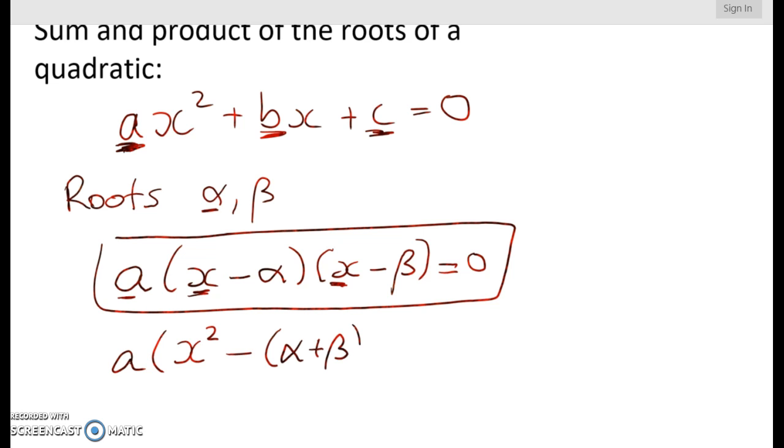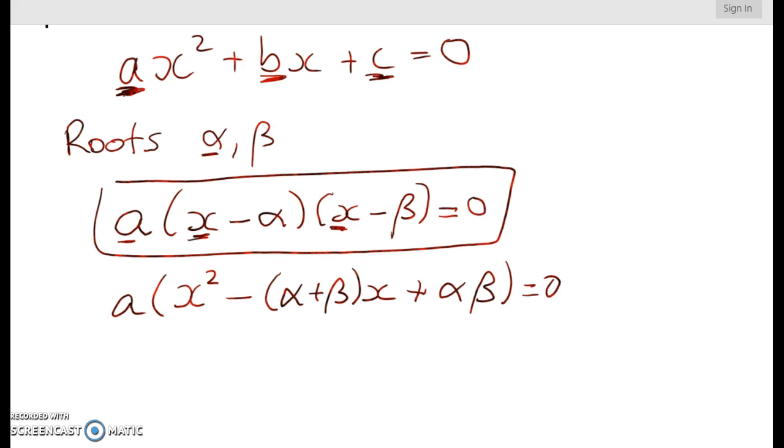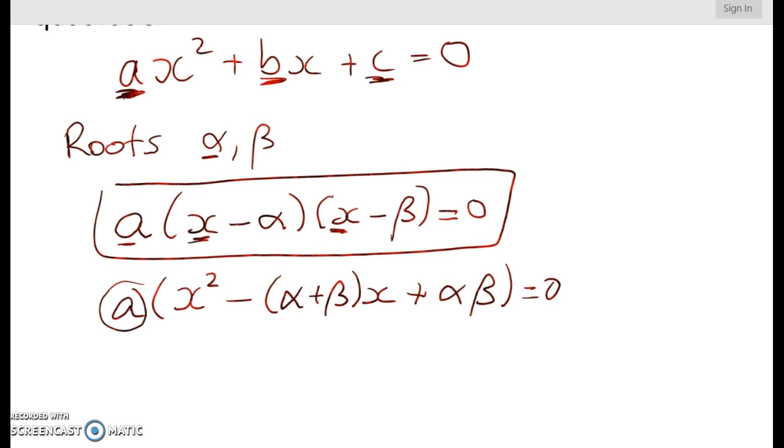So once we clean this up, this is what we come up with. Now that leaves me with a here. So ax squared, a equals a, well obviously. Then matching the b, we get negative a times alpha plus beta x is equal to b.